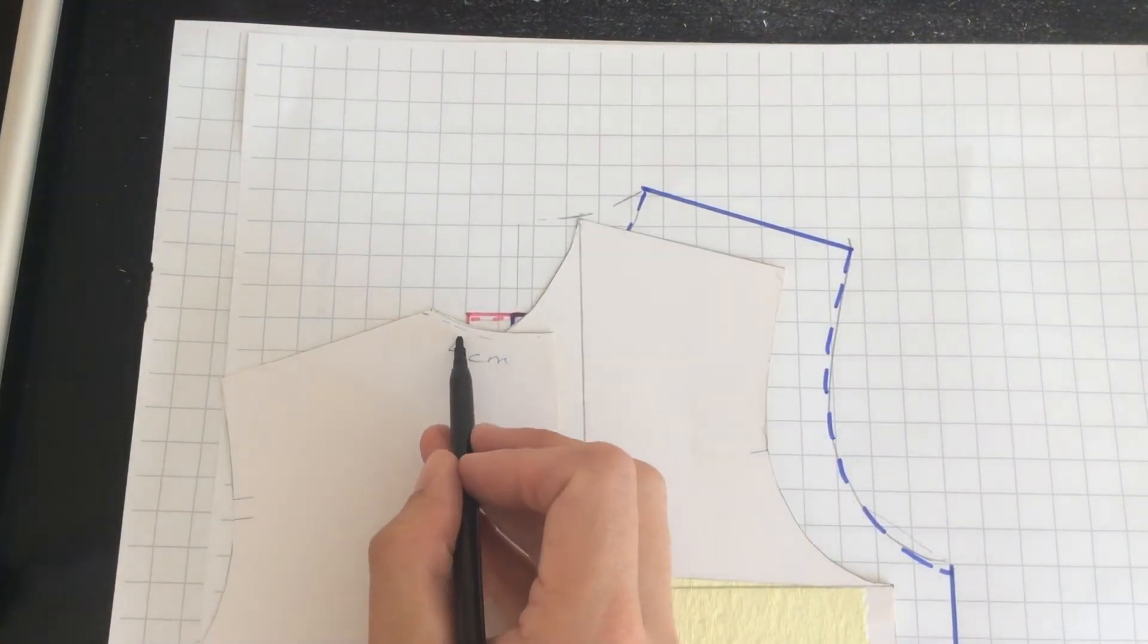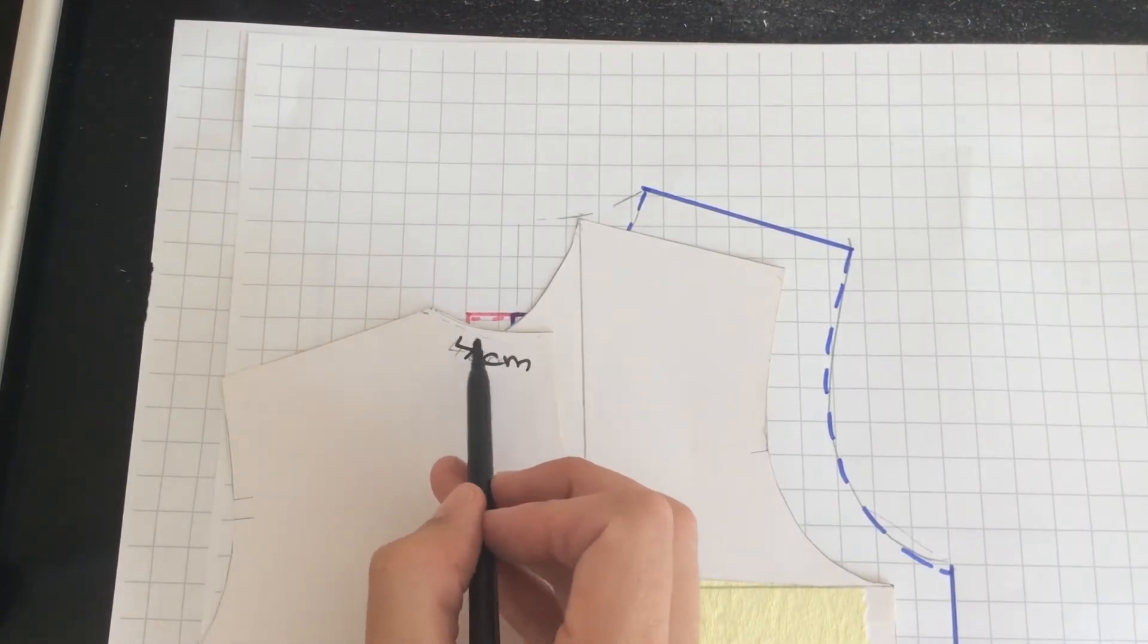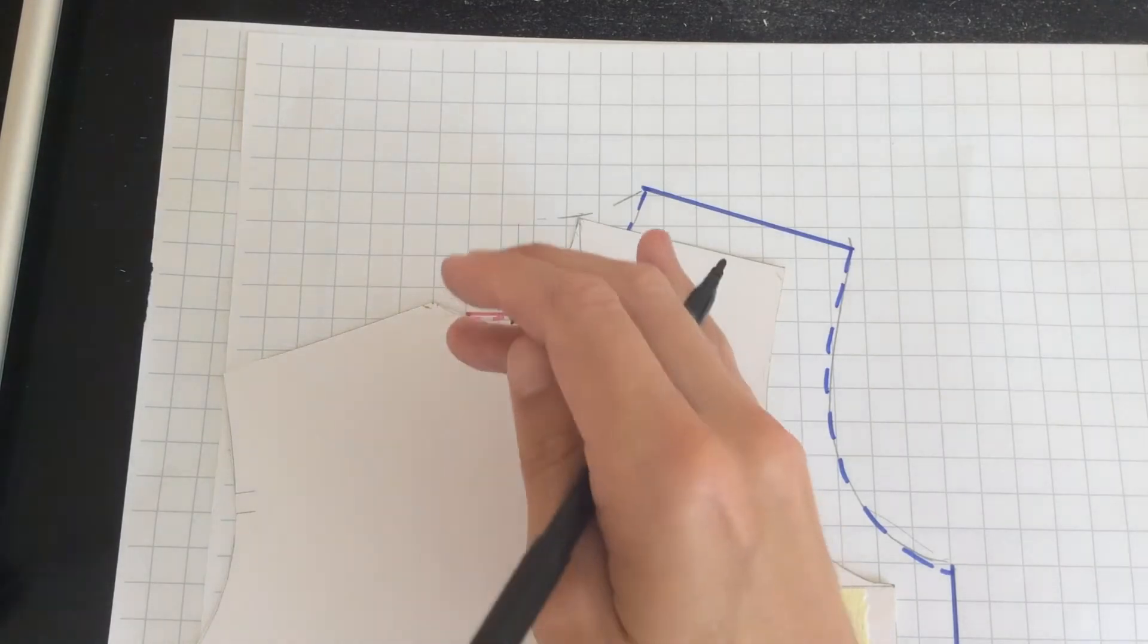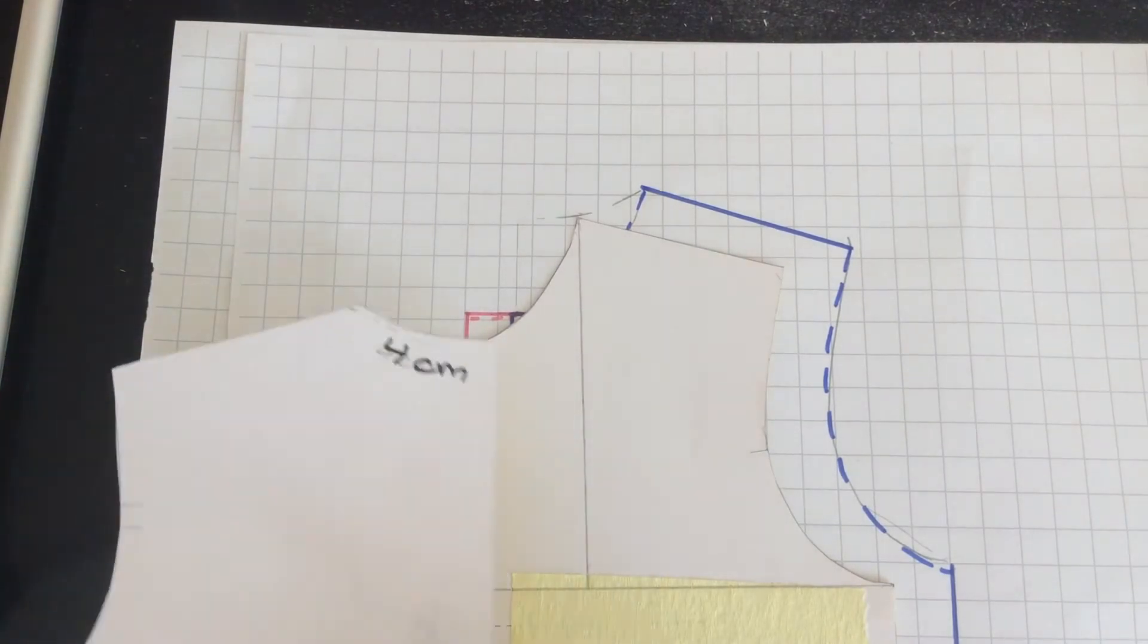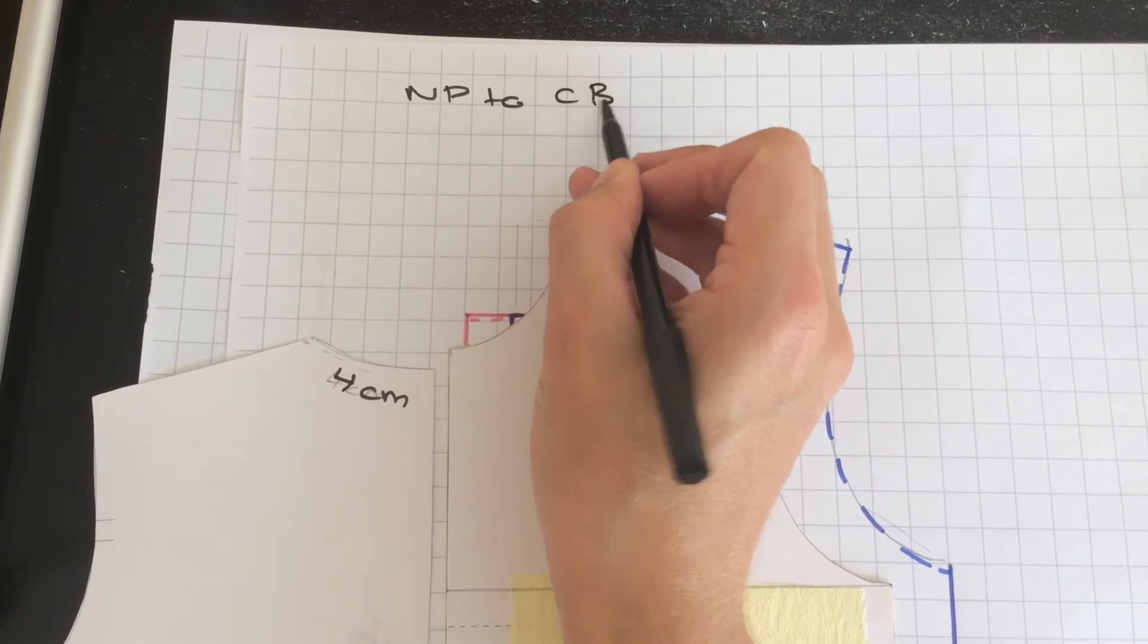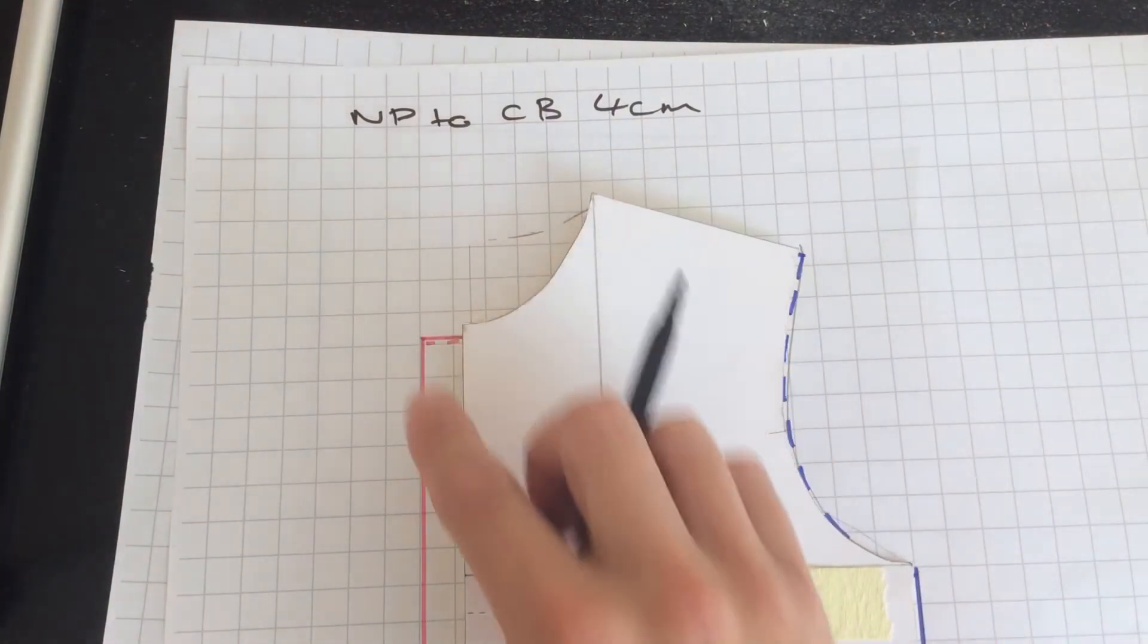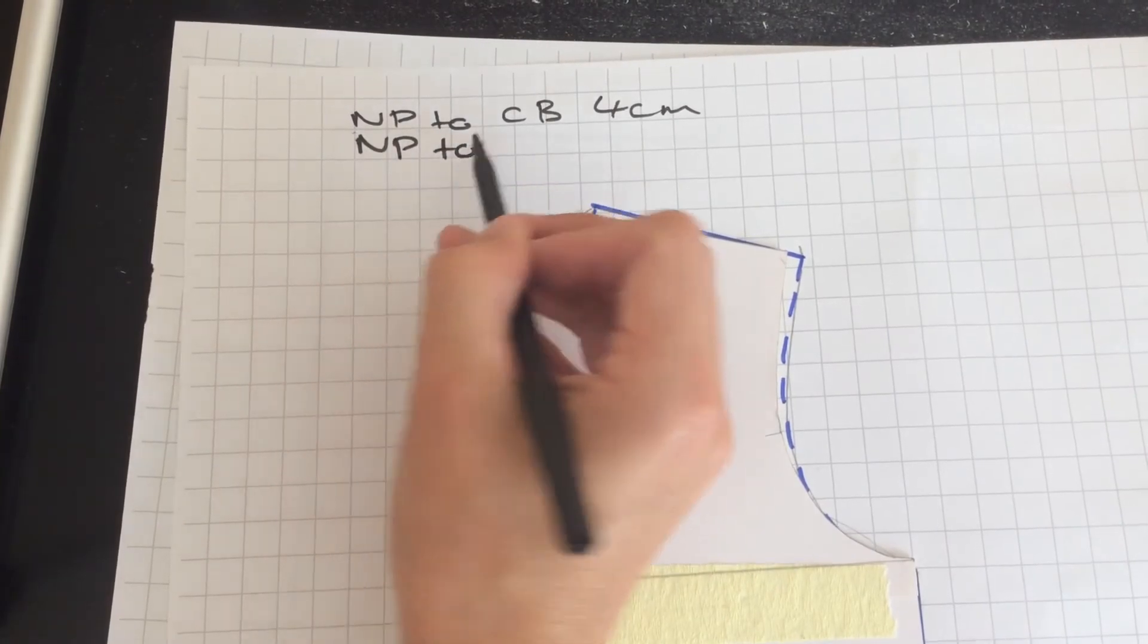So we need the front neckline measurement and we need the back neck measurement. We already know that this one is four centimeters, although again we might choose to lower this on the style because this is just the original block line, so at the moment it still could be pretty high. We haven't stylized or done anything to this, but I would just put neck point to center back four centimeters for this exercise, and then the other measurement would be from the neck point to the center front.